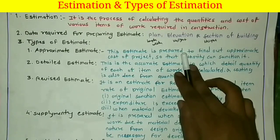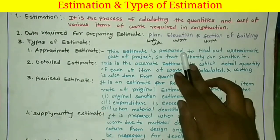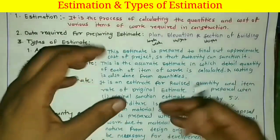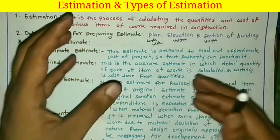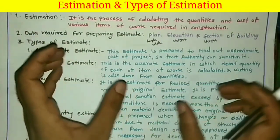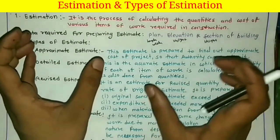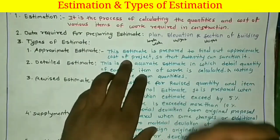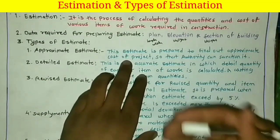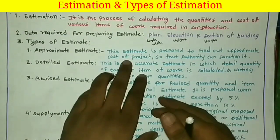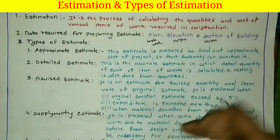The detail estimate is a fully described and accurate estimate, whereas the approximate estimate gives just an approximate quantity. For example, if in an area you are constructing a project and a similar building has already been constructed in that area, you can compare the construction cost of that existing building with your proposed building to get the approximate cost of construction. This gives the authority an idea whether to proceed with the project or not. Once the authority approves based on the approximate estimate, they give permission to prepare the detail estimate.